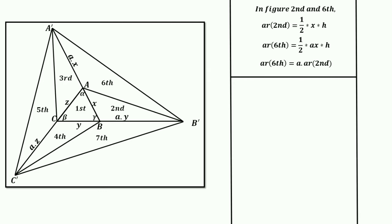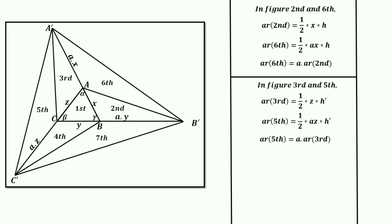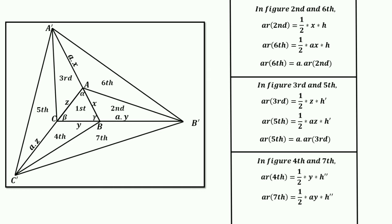Extending the same parallel-lines argument, area of region 5 = a·(area of region 3), and area of region 7 = a·(area of region 4).